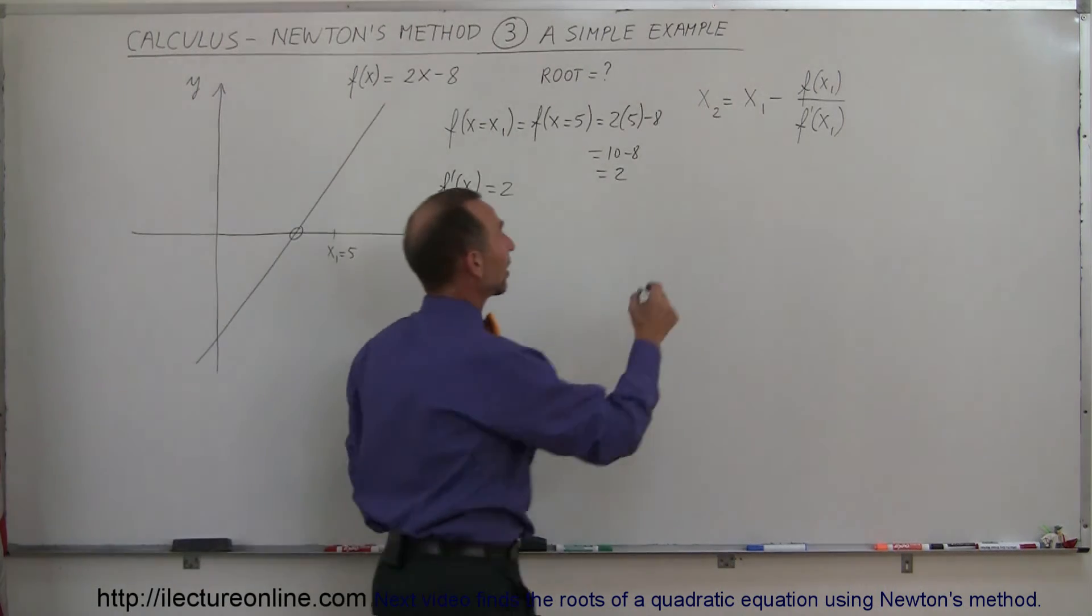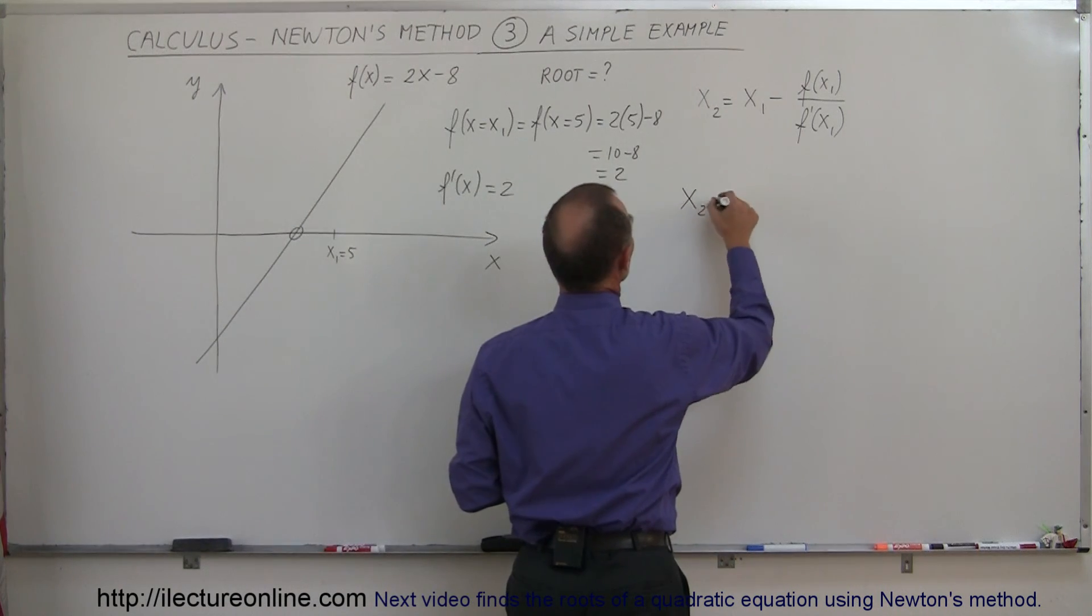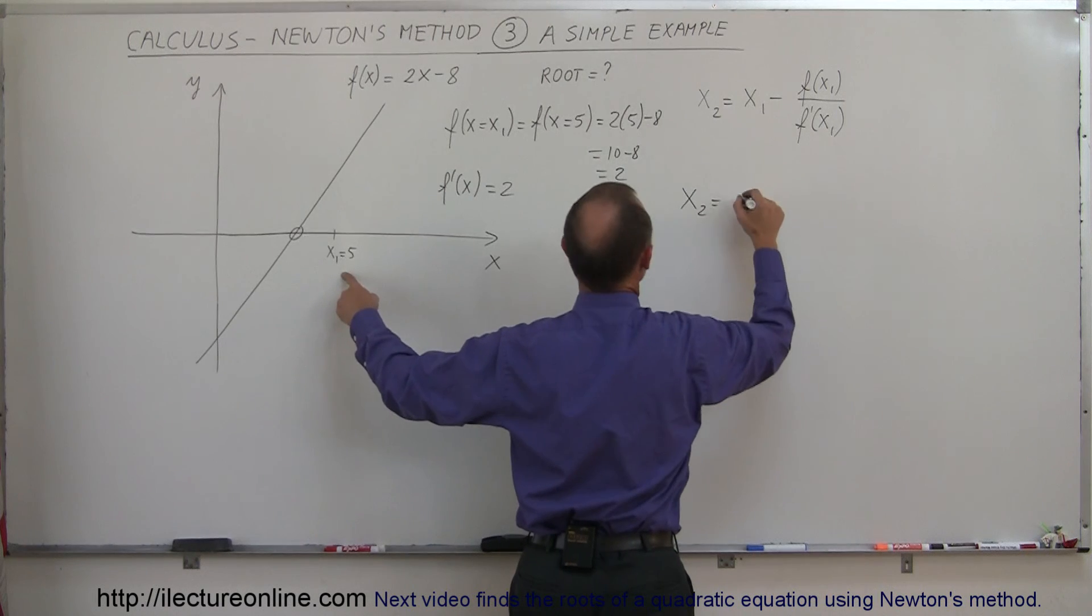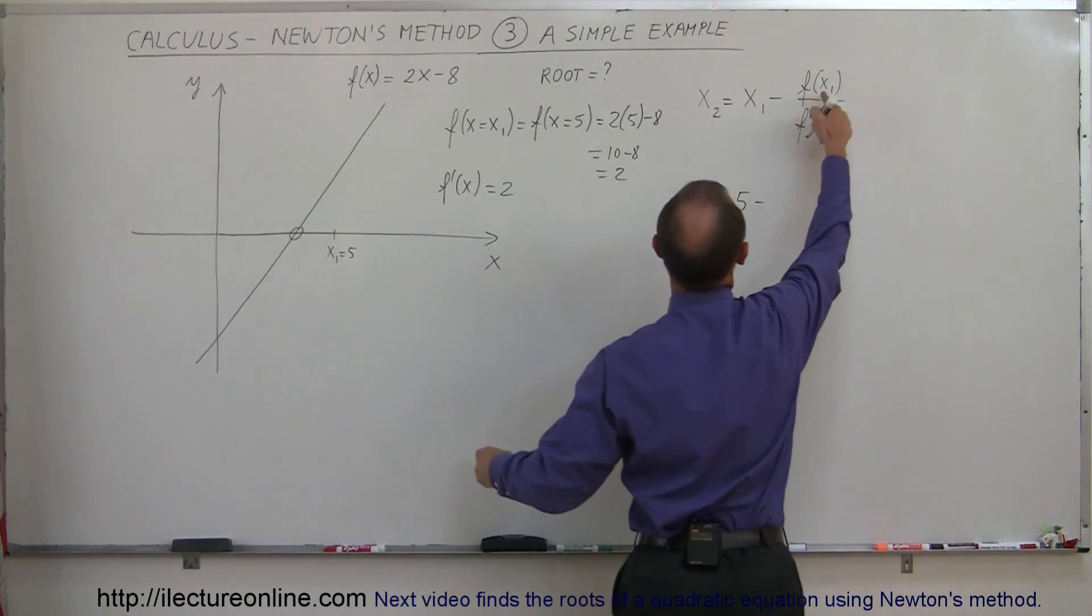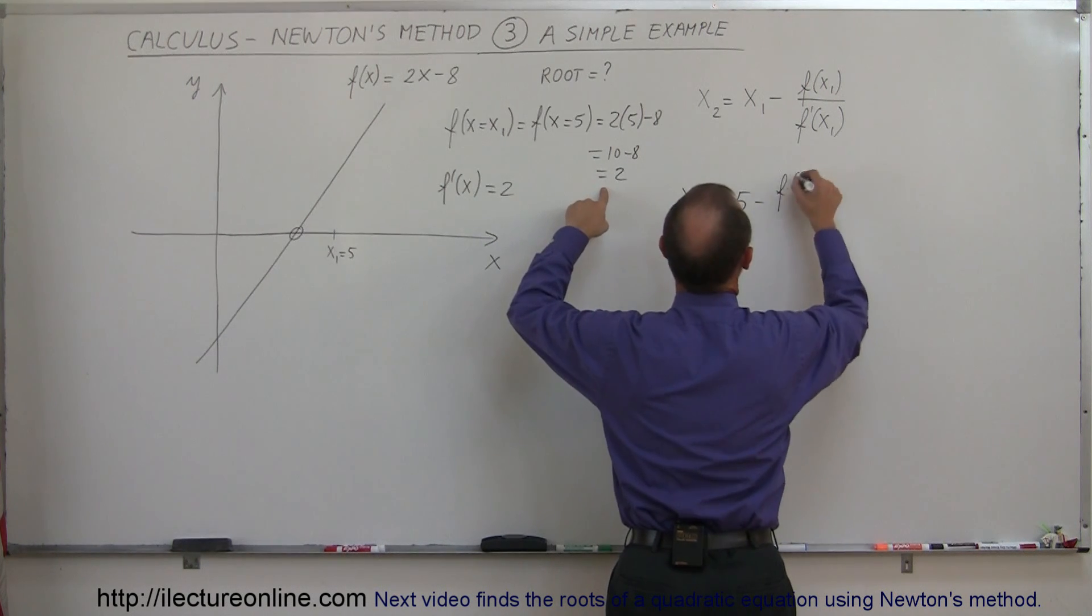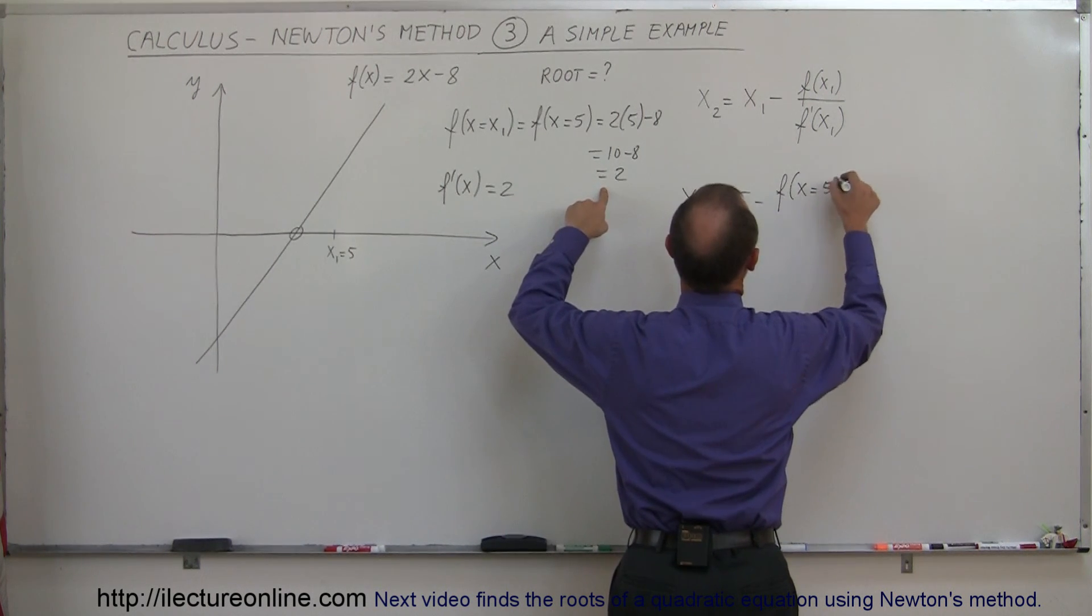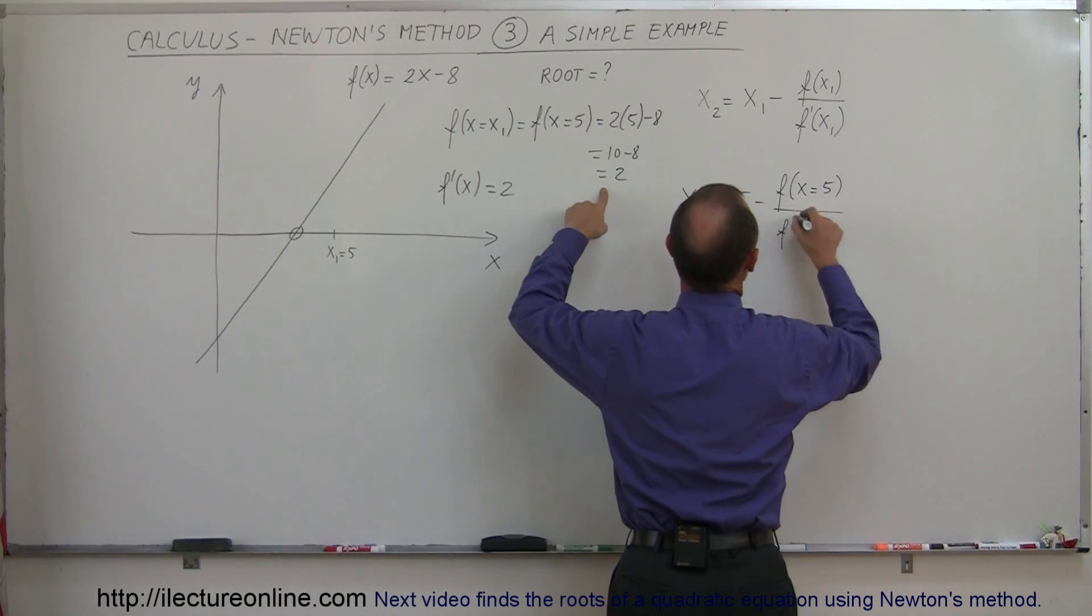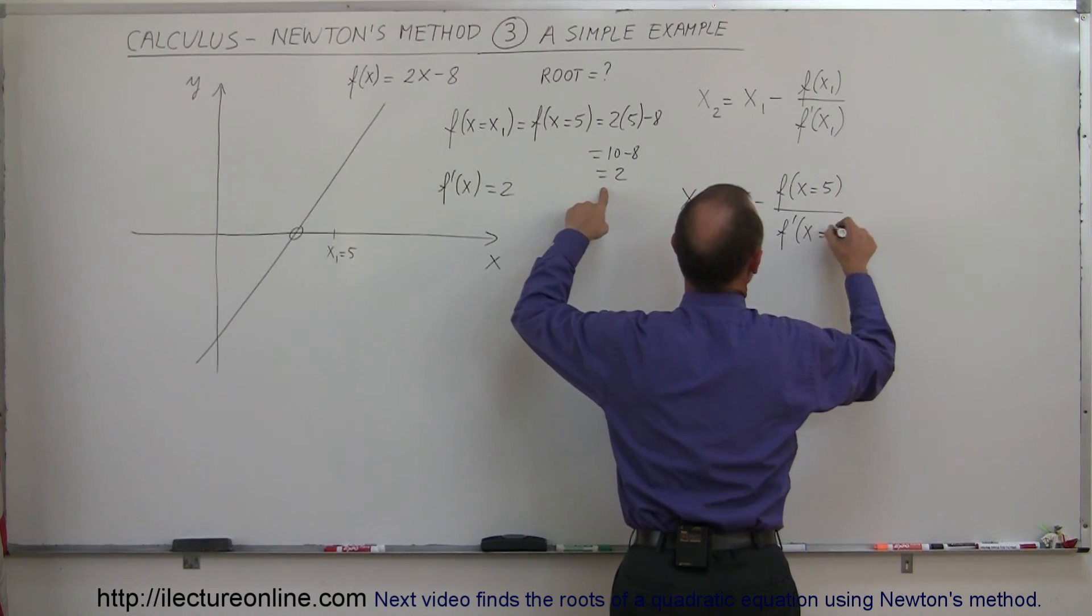And so we can then see that our second point, x₂, is equal to our first point, which we picked to be 5, minus the function evaluated at x₁, which is this one right here, so that's equal to the function when x is equal to 5, divided by the derivative when x is equal to 5.